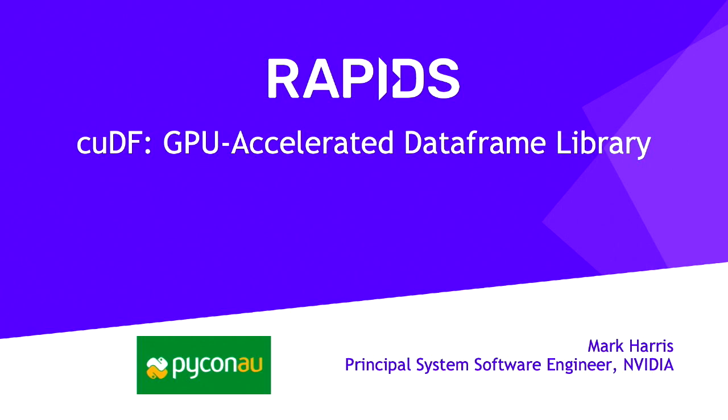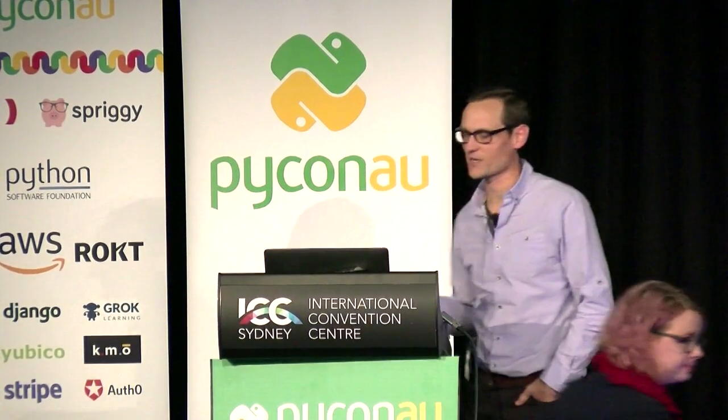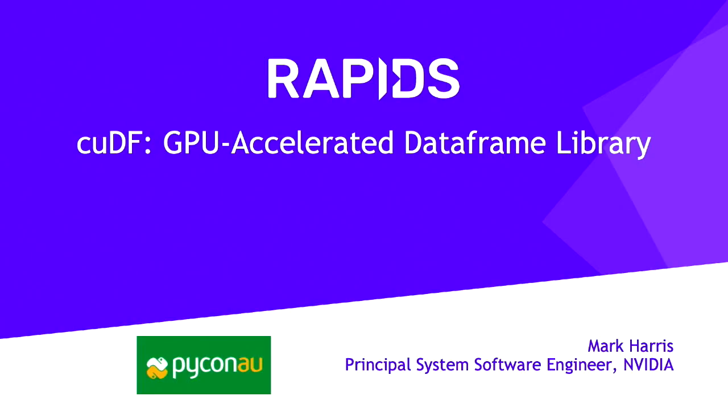Hi everybody. Just a little caveat — I'm a little out of my element here. I'm not a data scientist and I would call my Python programming at the level of dabbler. So let me talk to you about Python data science. What I'm going to talk about is RAPIDS, which is an open source suite of packages for accelerating data science on GPUs — graphics processing units.